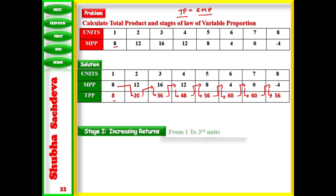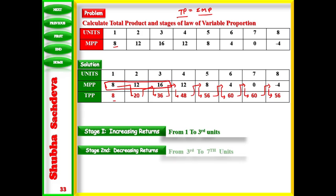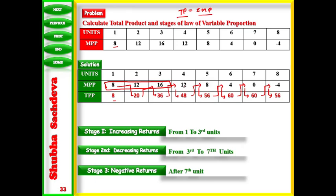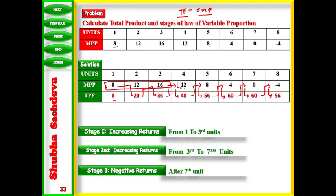Now we identify the stages. From the first to third units, MP values are 8, 12, and 16 — it is increasing. So the first stage is from unit 1 to unit 3. After this, MP is decreasing from 12, 8, 4 down to 0 up to the seventh unit — that is diminishing returns. Then at the eighth unit, it is negative returns.